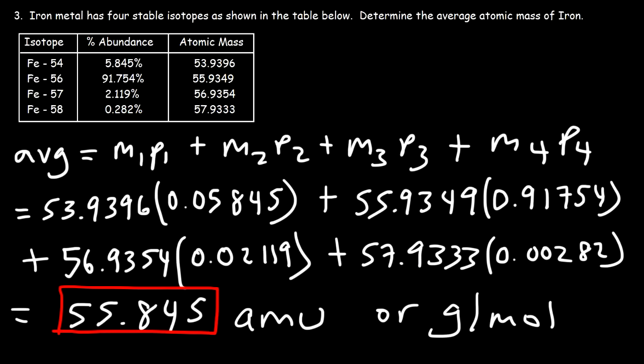Now let's think about the number that we have. In the last example, we saw that the element or isotope that is most abundant is the one whose mass is closest to the average. So Fe-56 is the most abundant isotope—91.754% of iron metal consists of this isotope. And notice that the average is very close to Fe-56 because it's the most abundant one there.